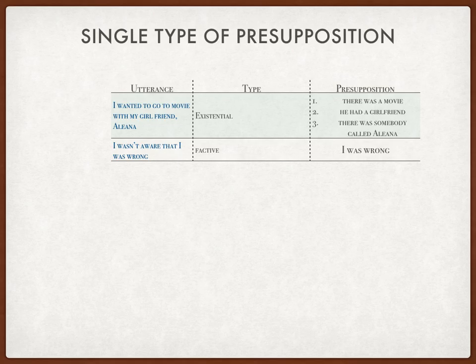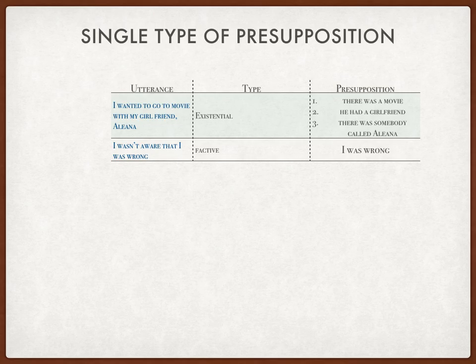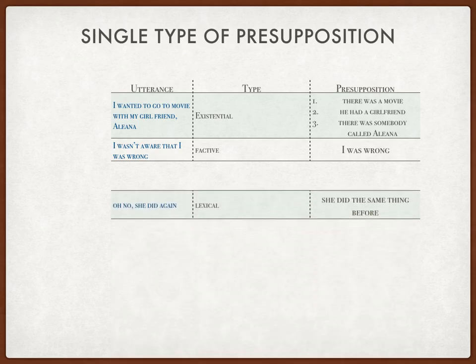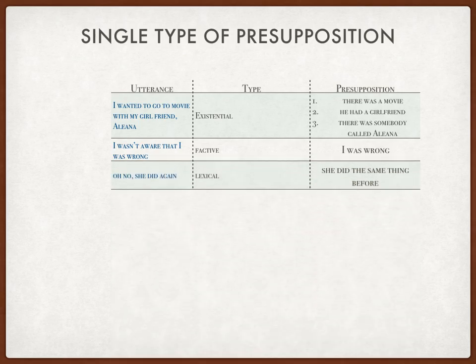The second sentence is: 'I wasn't aware that I was wrong.' This shows an example of the factive type, because the sentence contains the word 'aware,' which is almost similar to 'knew' or 'realized.' This means the adjective clause following the word is factive, so the presupposition is: I was wrong.